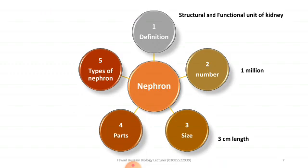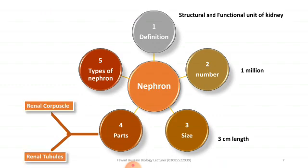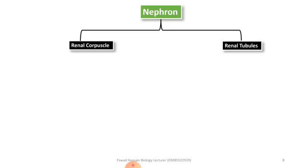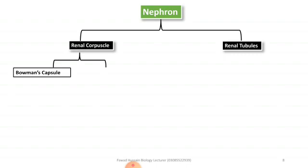There are two main parts of the nephron: the first is the renal corpuscles and the second is the renal tubules. The renal corpuscles are divided into two parts: the first one is the Bowman's capsule, and the second one is the glomerulus, as shown in the diagram.